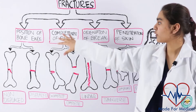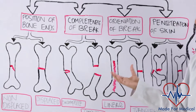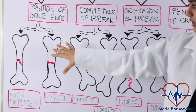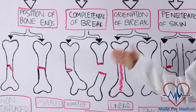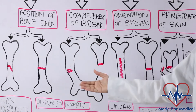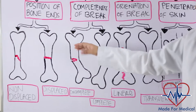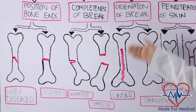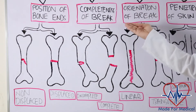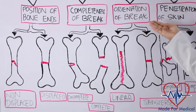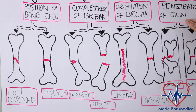Let's talk about the types of bone fractures. Pay close attention to this part, because there are often test questions about types of bone fractures where you're given a scenario and have to identify the fracture type. Bone fractures can be categorized in four ways: by the position of the bone ends after the fracture, by the orientation of the break, by completeness of the fracture, or whether the bone ends penetrate the skin or not.